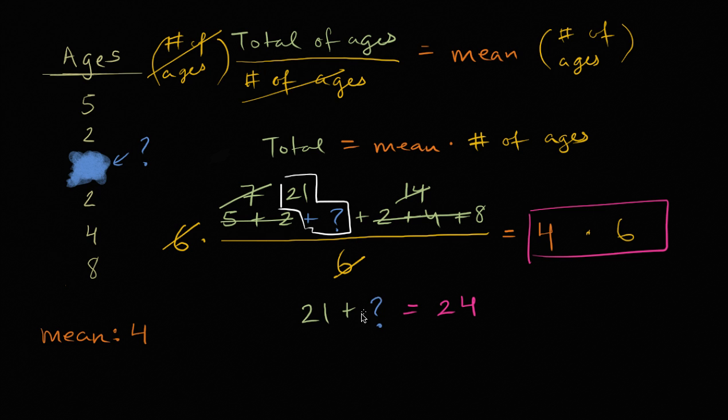And so what's the question mark? Twenty-one plus what is equal to twenty-four? And we can of course, well it's going to be three. Or if you want to, you could say, well question mark is going to be equal to twenty-four minus twenty-one, which is of course three.